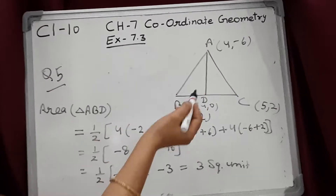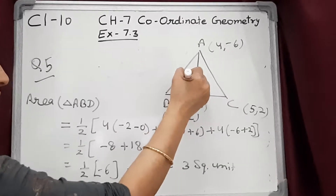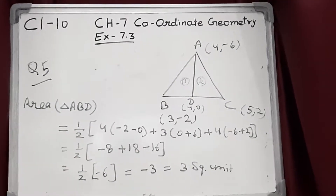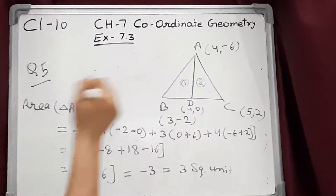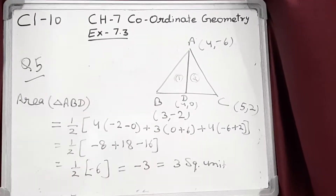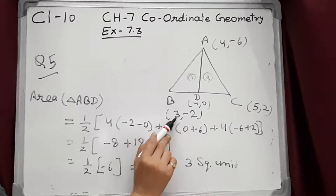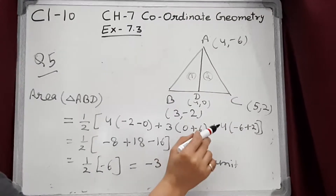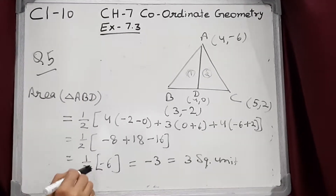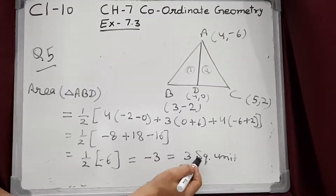This median AD divides triangle ABC into two triangles of equal area — the first triangle ABD and the second triangle ADC. Find area of triangle ABD using A(4, −6), B(3, −2), D(4, 0): half into x₁(y₂ − y₃) + x₂(y₃ − y₁) + x₃(y₁ − y₂). After solving, we get −6/2 = −3, and since area is always positive, area of triangle ABD = 3 square units.